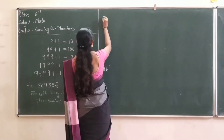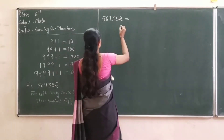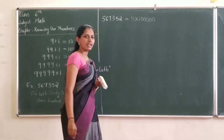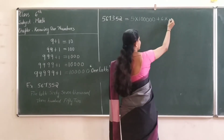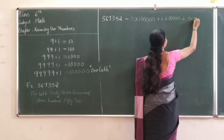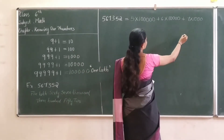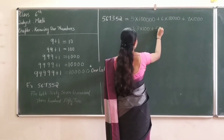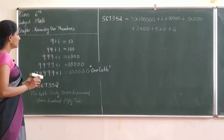So firstly I have to write the number. What is this? Five lakh — so 5 into 1,00,000 — plus 6 into 10,000 — that is the 5-digit place — next 7 into 1,000, plus 3 into 100, plus 5 into 10, then 2. Correct, understood.